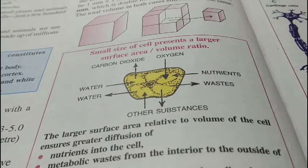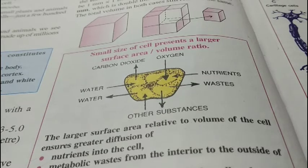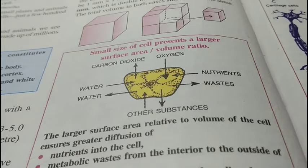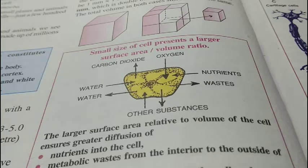Hello class 9, today we are going to discuss the different kinds of cells and organisms according to the number of cells present in them. If any organism is made up of only one cell, then it is called a single-celled organism. For example, bacteria, yeast, amoeba.